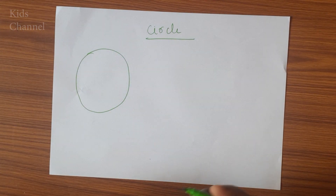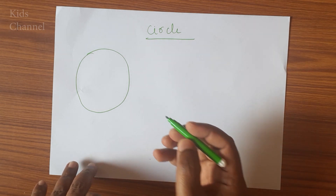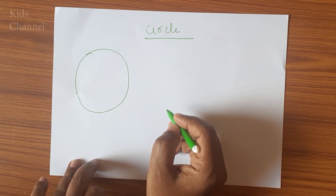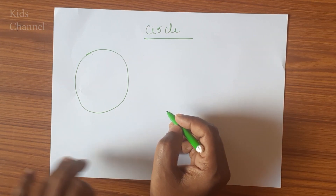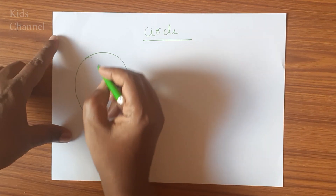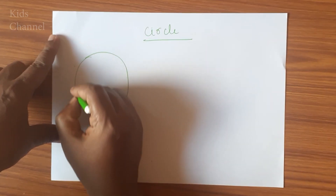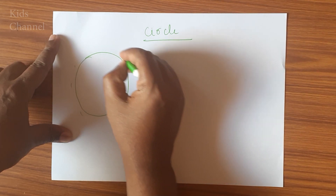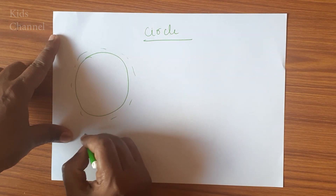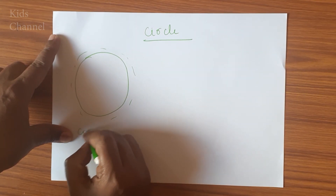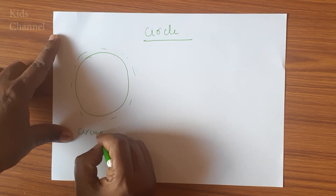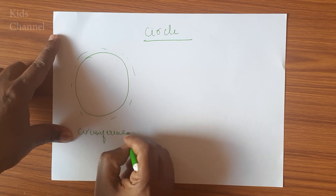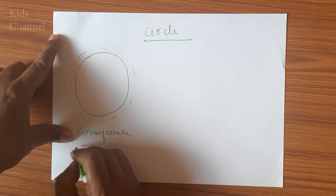A circle is round. It has no angles. Its outer line is called the circumference. It has no angles.